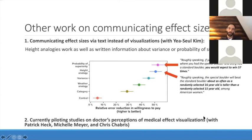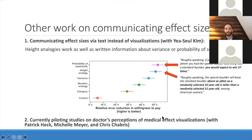Some parting thoughts: First, it's pretty hard to communicate both statistical significance and effect size, even for our own studies. In our paper we actually made plots of both types for every single result — standard error plots and standard deviation plots — and it's a pain to read, but we felt we should hammer the point home. Even in our own study on visualizing effect sizes, it's hard to communicate both. And I'll give some thoughts on ways to do that more efficiently.